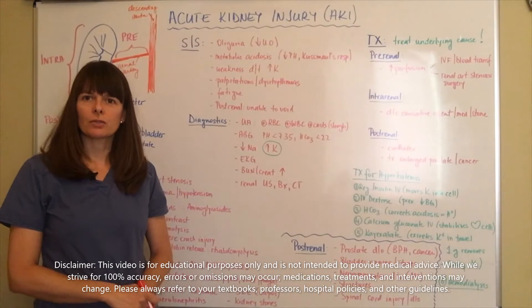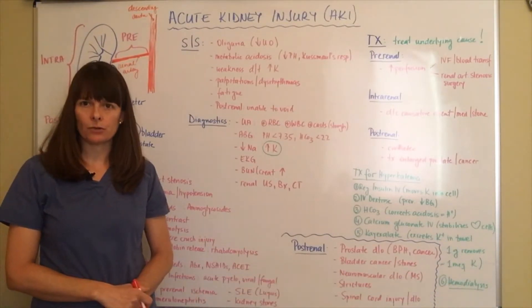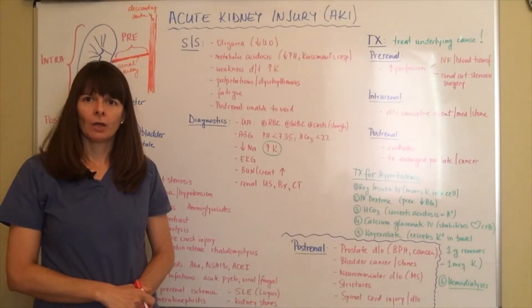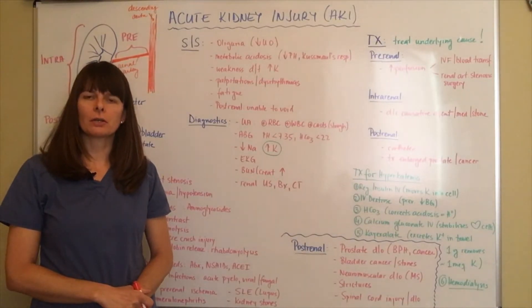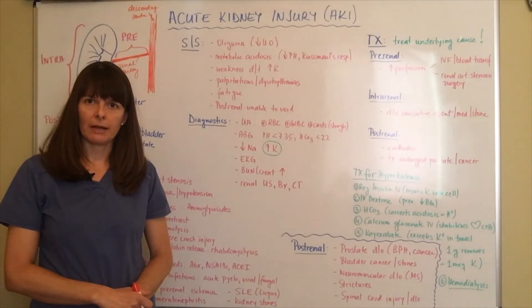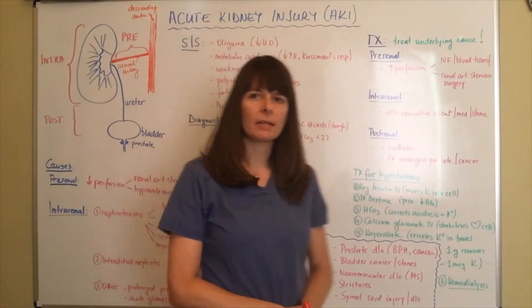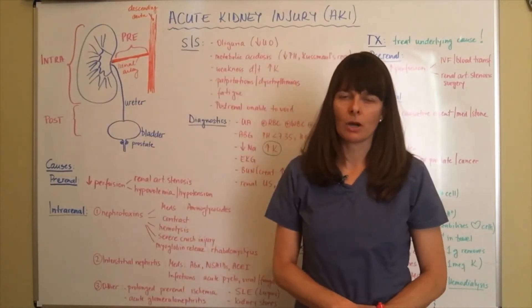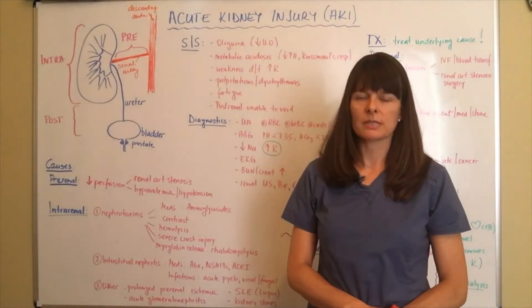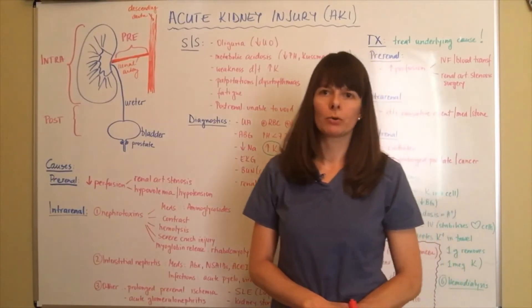Hello and welcome to Nursing School Explained. Today's topic is acute kidney injury. Whenever we talk about any kind of injury or physiological mechanism, it always helps to look at the physiology behind the causes. For acute kidney injury, there are basically three types of causes: pre-renal, intra-renal, and post-renal.